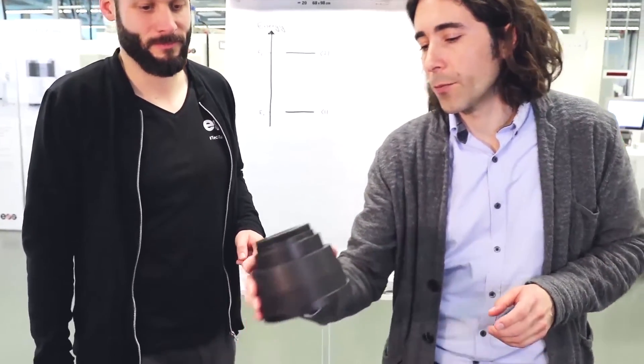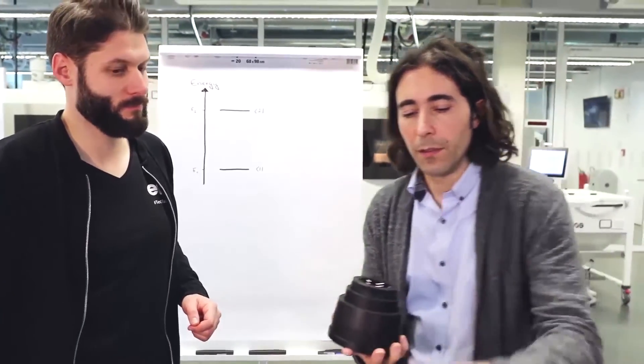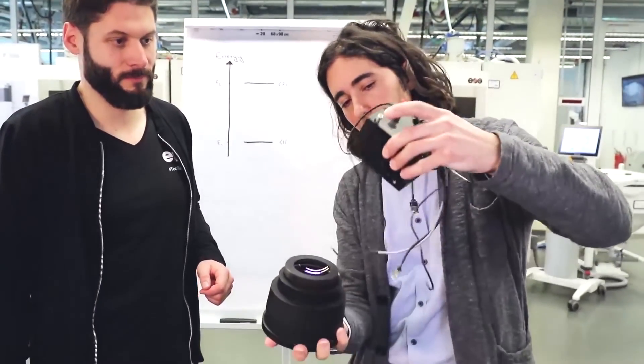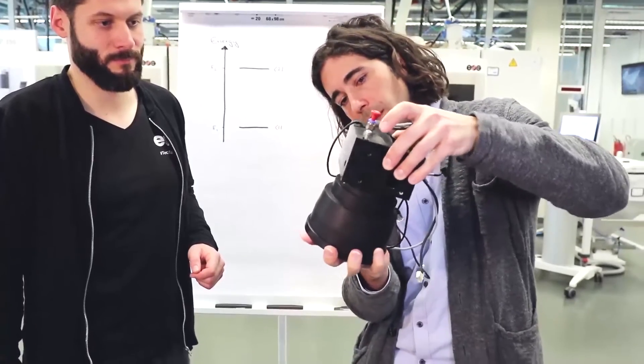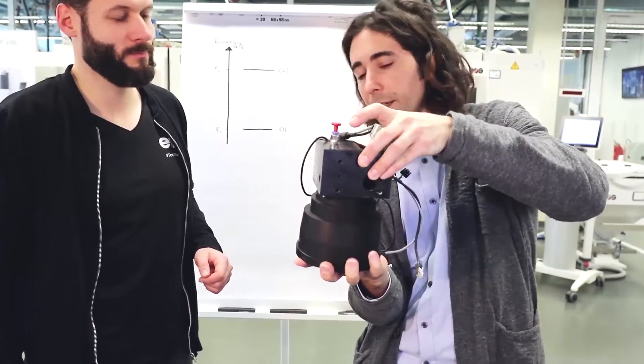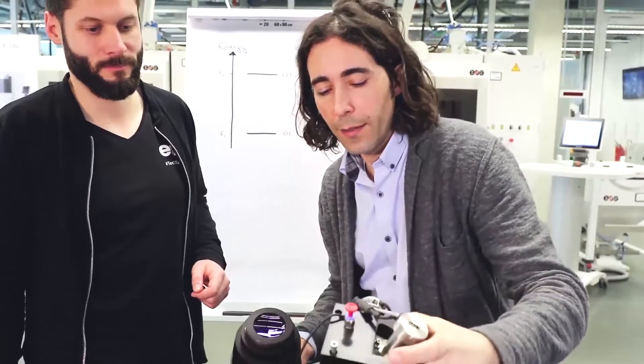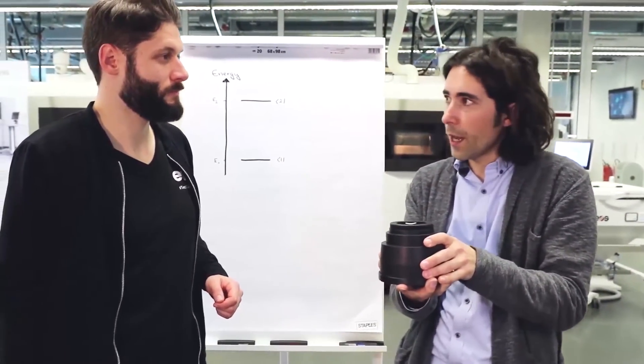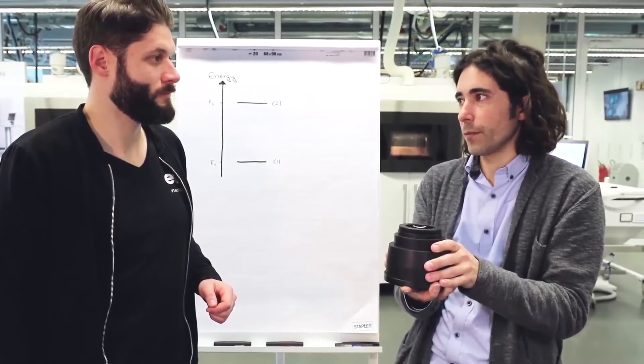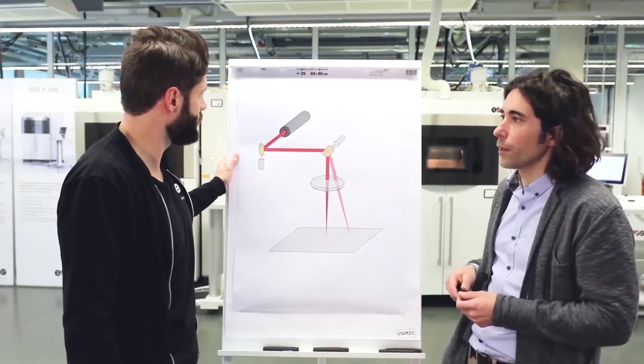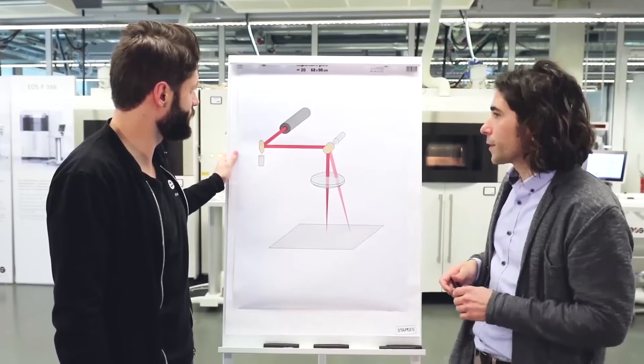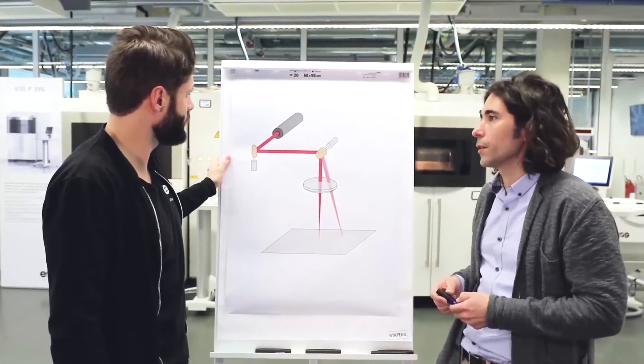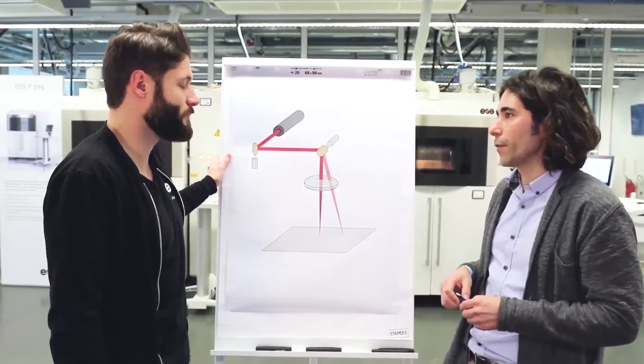Now the scan head is mounted on top of a scanning objective, which I have here. Something like this. It sits very tightly on top of it. And the purpose of the scanning objective is to focus the laser light on the powder bed plane. These are the essential parts of a laser scanning system typically used for powder bed additive manufacturing.